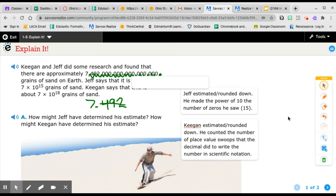So Keegan was correct. Keegan did this correctly. Jeff did not. Jeff counted the number of zeros, which is a really common error. But you have to swoop and count the total number of place value jumps that you're doing.